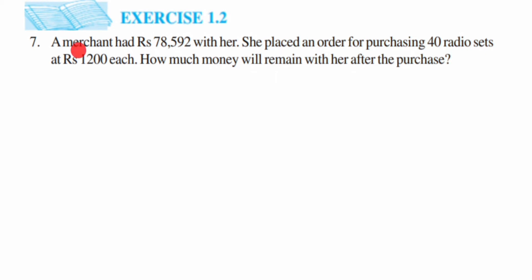The merchant had rupees 78,592 — that's the amount she has. She ordered 40 radios, and each radio costs rupees 1200. First, let's find out the actual cost of those 40 radios, and then we'll find out how much money is still left with her.